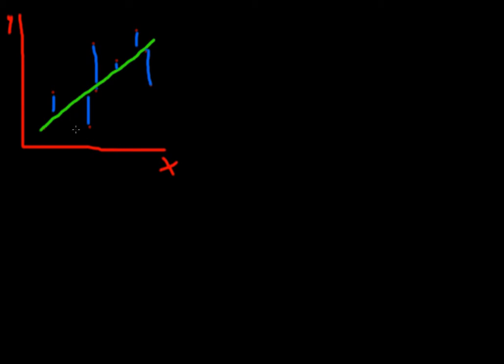The measure we are looking for is called the coefficient of determination, and it is abbreviated by R squared. R squared is nothing more than the correlation coefficient r, squared. Because we are squaring a value between minus one and one — those are the numbers r can take — we will always get a number that is between zero and one.